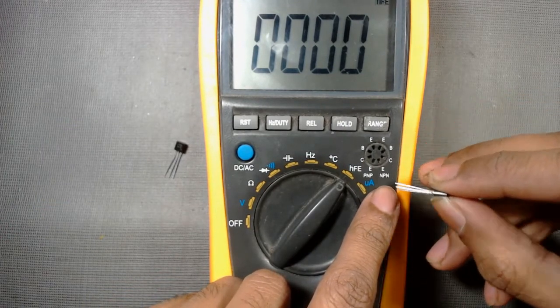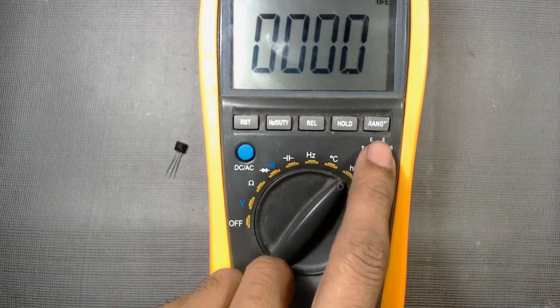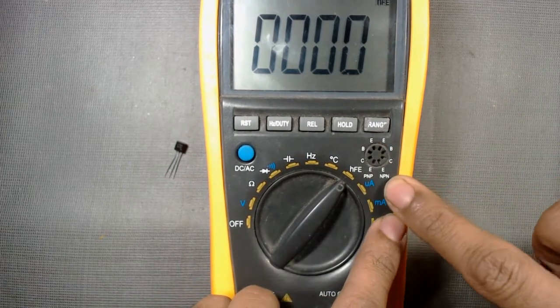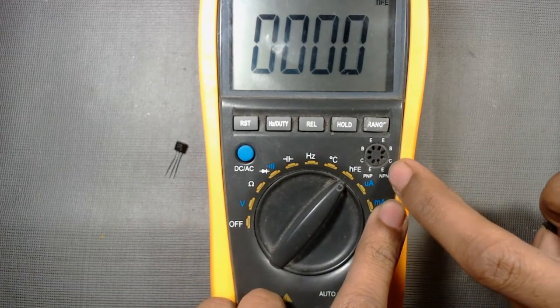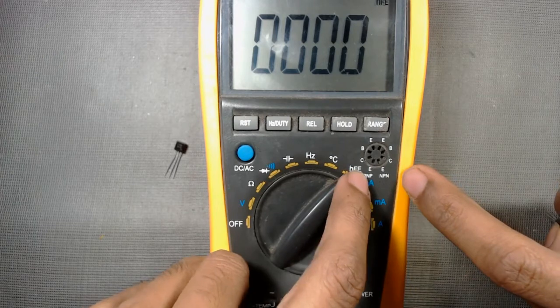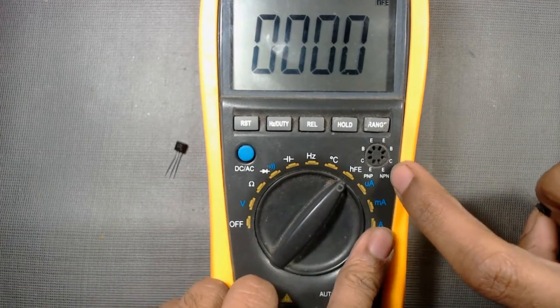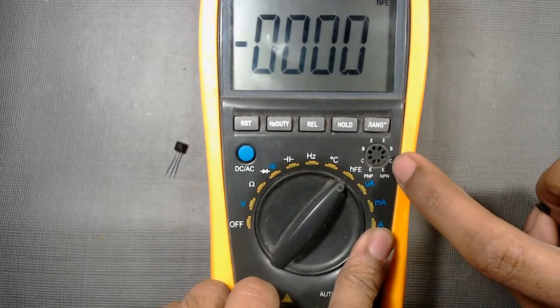emitter, base, collector. You can see these holes are there in this DMM. One side is NPN and another side is PNP. This side is written as NPN and collector,